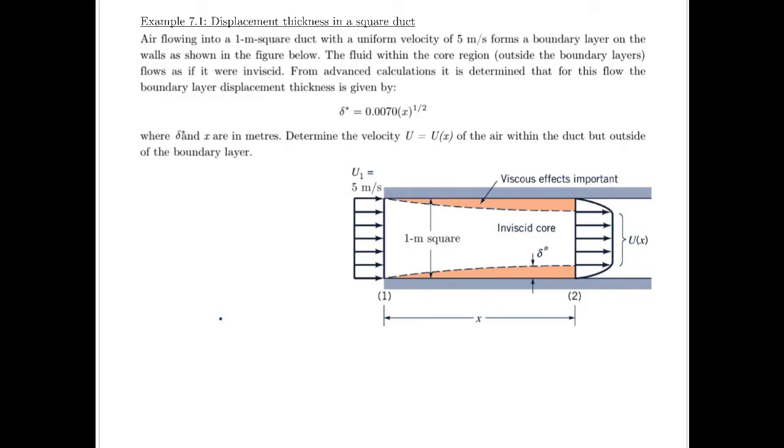So we have a duct - air flowing into a one meter square duct with a uniform velocity of five meters per second. It forms a boundary layer on the walls, as we'd expect. It's a square duct, so each of these walls is a flat plate.